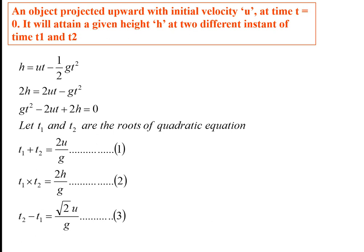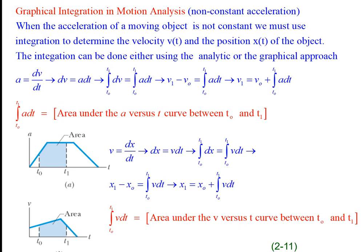If an object is projected upward with initial velocity u at t = 0, it attains the same height at two different times t₁ and t₂ — once on the upward journey and once on the downward journey. Using the kinematic equation h = ut − ½gt², you get a quadratic. Then t₁ + t₂ = 2u/g and t₁ × t₂ = 2h/g, giving t₂ − t₁ = √(2u/g).